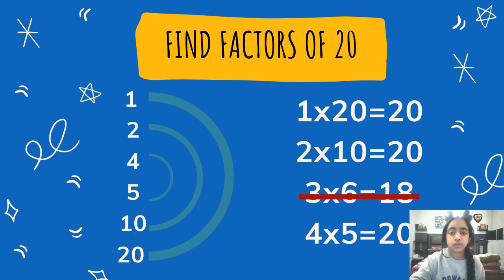Now we do 2 times 10 which is 20. Write them and mark an arc. After 2 is 3. Now over here, 3 times 6 is 18, and 3 times 7 is 21. But there is no exact number for 20. There is no 20 in the multiplication table of 3. So we cancel out 3 as it is clearly not a factor of 20.